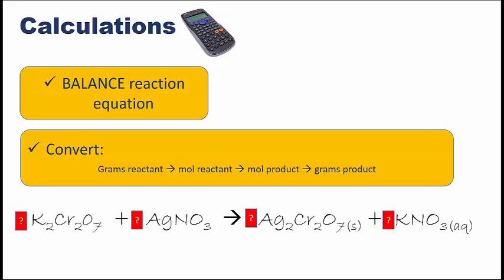Once we're in moles of reactant, we can cross the mole bridge to moles of product, and then we can use the molar mass of the product to convert from moles to grams of product. There's a few calculations that you need to do, but we've learned this process in this unit of Chemistry 11, and so this will be applying it now in the lab.